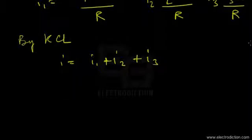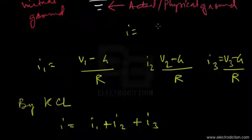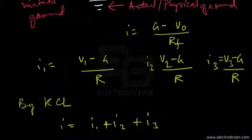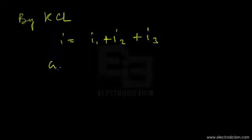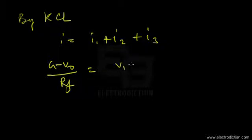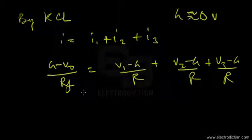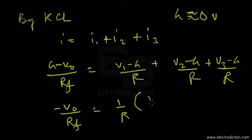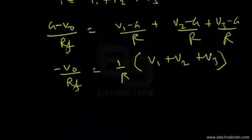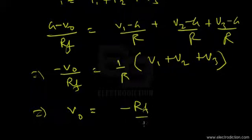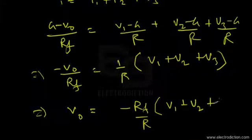Putting in the values, I equals (G − VO)/RF. So we get: (G − VO)/RF = (V1 − G)/R + (V2 − G)/R + (V3 − G)/R. Substituting G ≈ 0 volts as the virtual ground voltage, we get −VO/RF = (1/R)(V1 + V2 + V3), and therefore the output voltage equals −(RF/R)(V1 + V2 + V3). That's the relationship we were looking for.